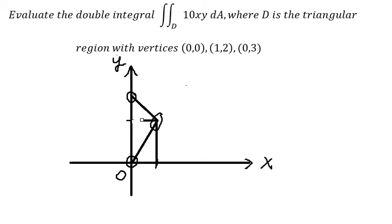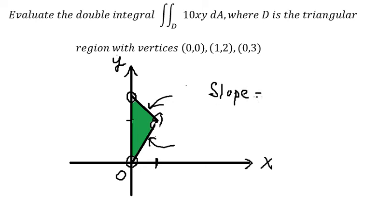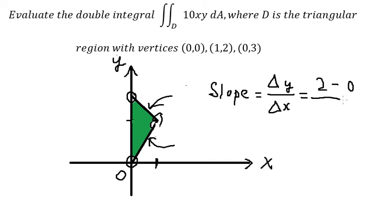We need to concentrate on this area, so we need to find the equations of these two boundary lines. To find the equation, we use the slope: slope equals delta y over delta x. For the first line through (0,0) and (1,2), we have 2 minus 0 over 1 minus 0, which gives slope 2.